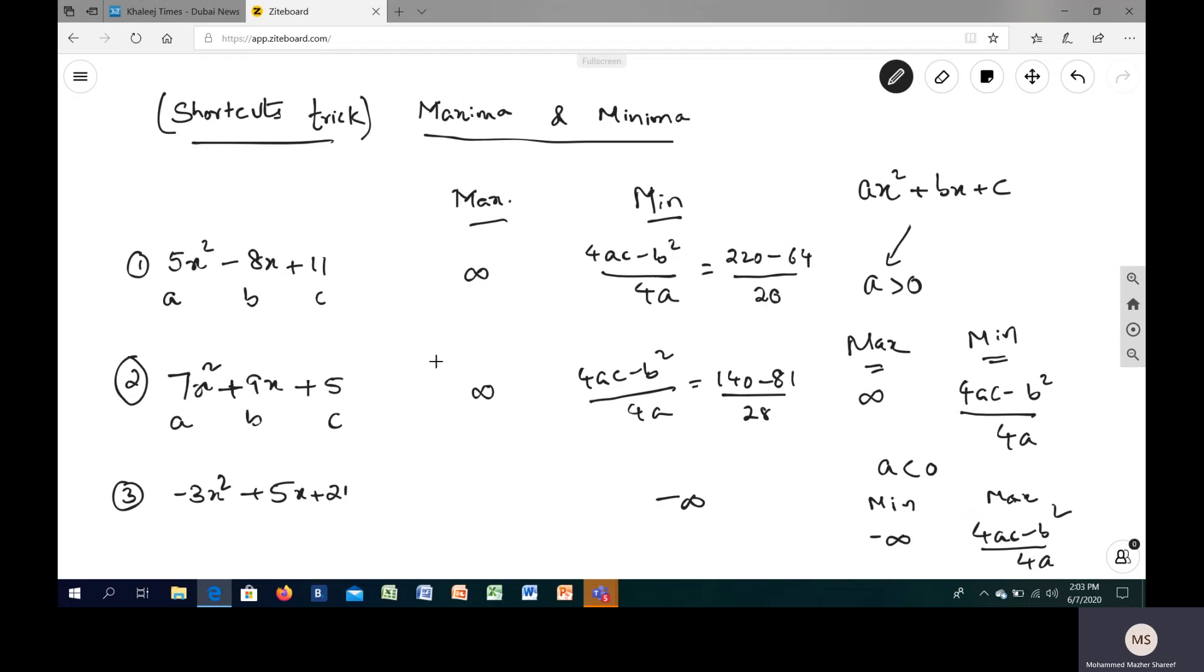Similarly, when we have to find out the maximum for a negative coefficient of x squared, your answer maximum will be this formula. So 4 times a and c, remember a, b and c. So 4ac, 21 times 4 is 84, 84 times 3 and then minus 25 will give you the answer. 4ac minus b squared by 4 into a, that is negative 12.